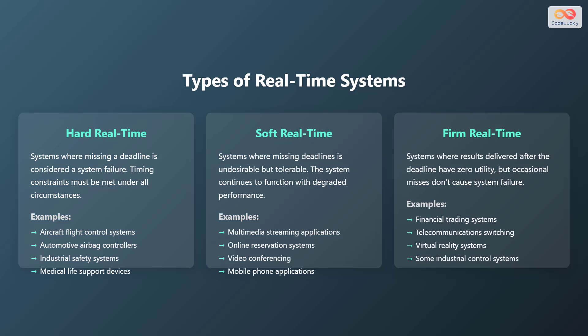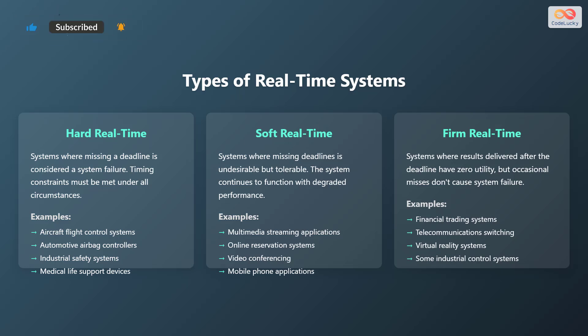Next, we have soft real-time systems. In these systems, missing deadlines is undesirable but tolerable. The system will continue to function, although with reduced performance. Examples include multimedia streaming applications, online reservation systems, video conferencing, and mobile phone applications.